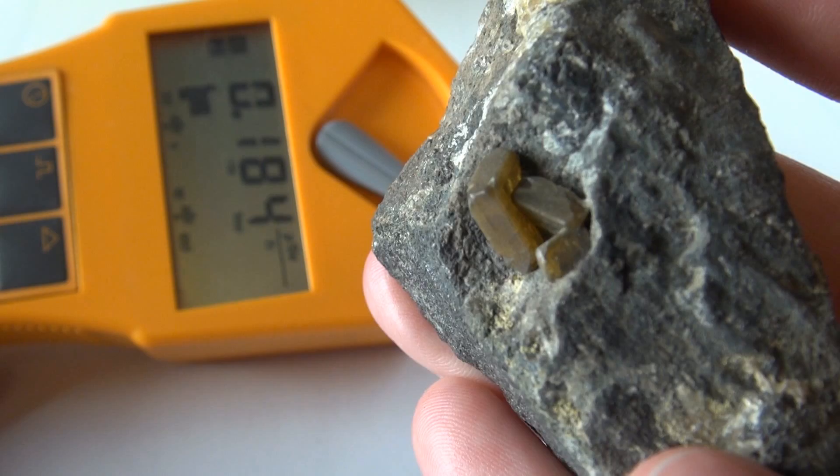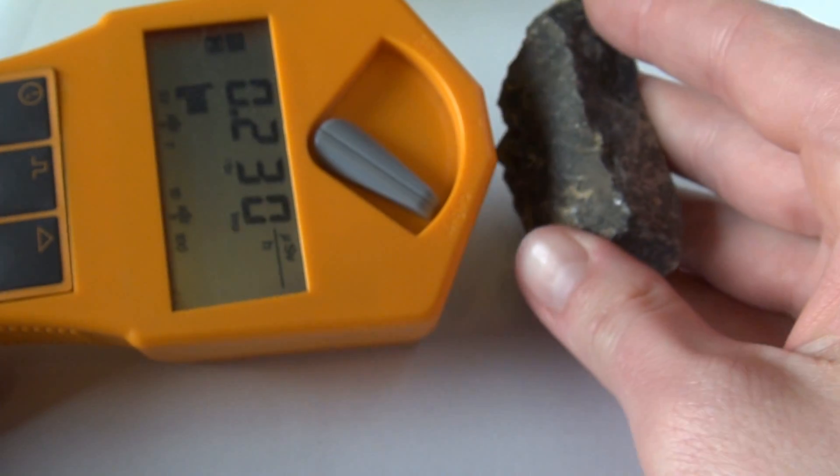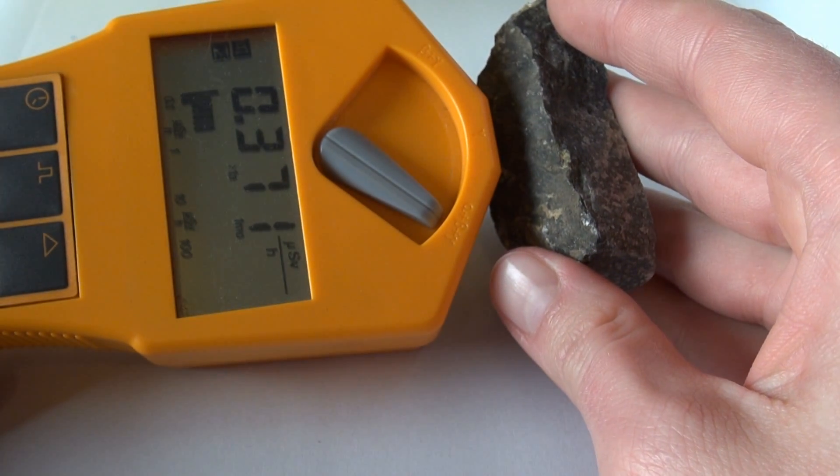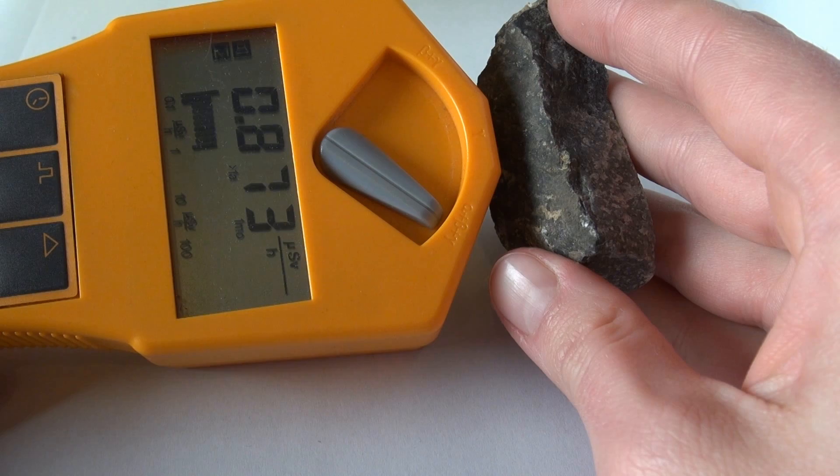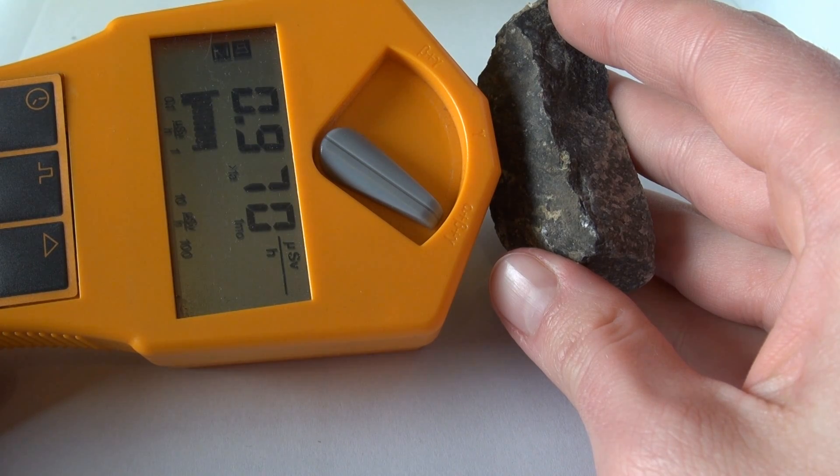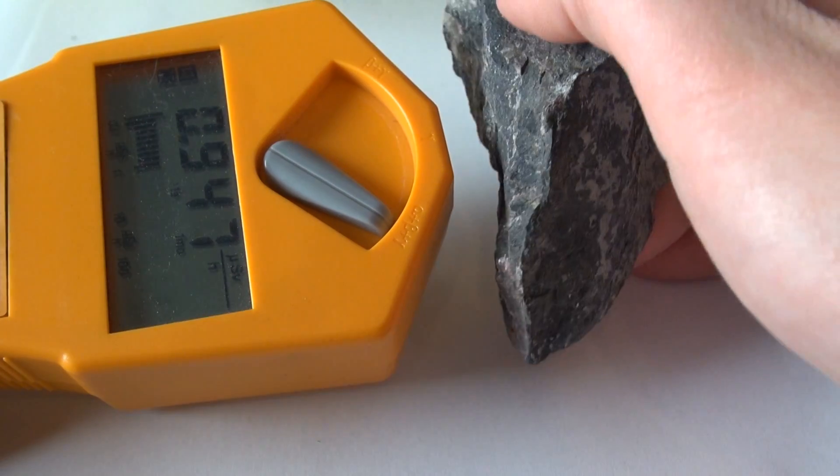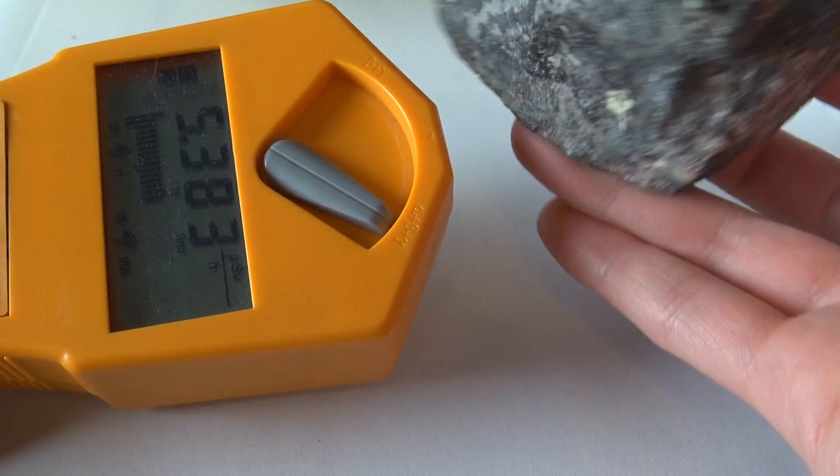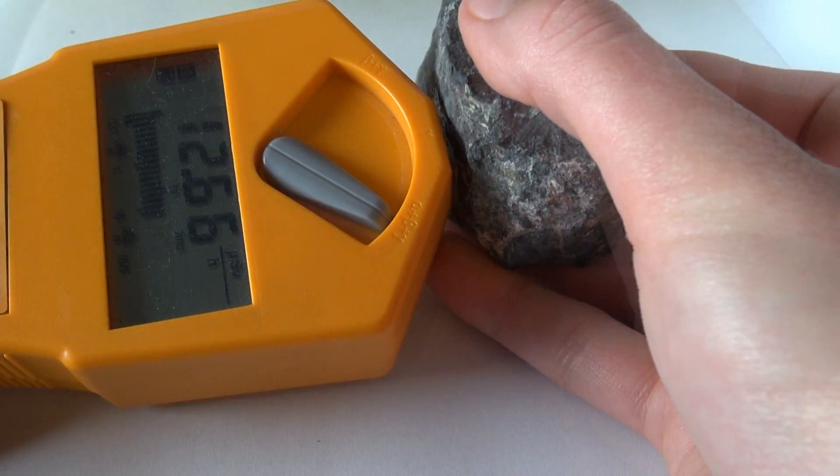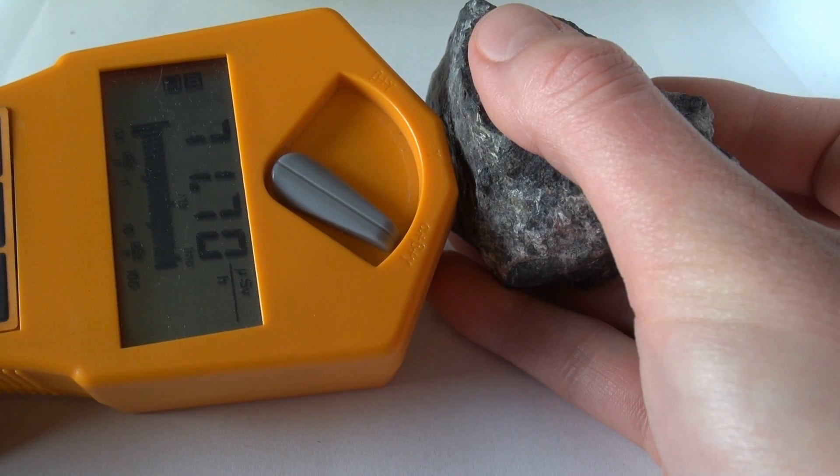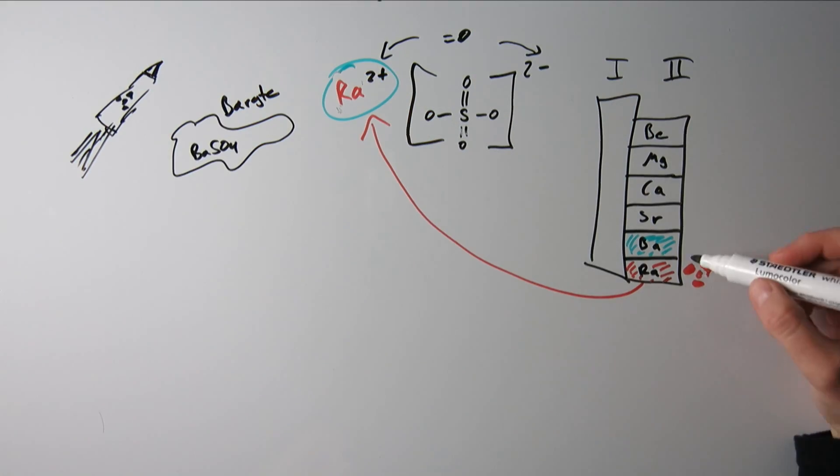So in comparison the barite is not too terribly radioactive, but you can measure it with a gamma scout for example. To put it into perspective, comparing to pitchblende of course it's still a minor dose of radiation. Anyway, back to our barite.